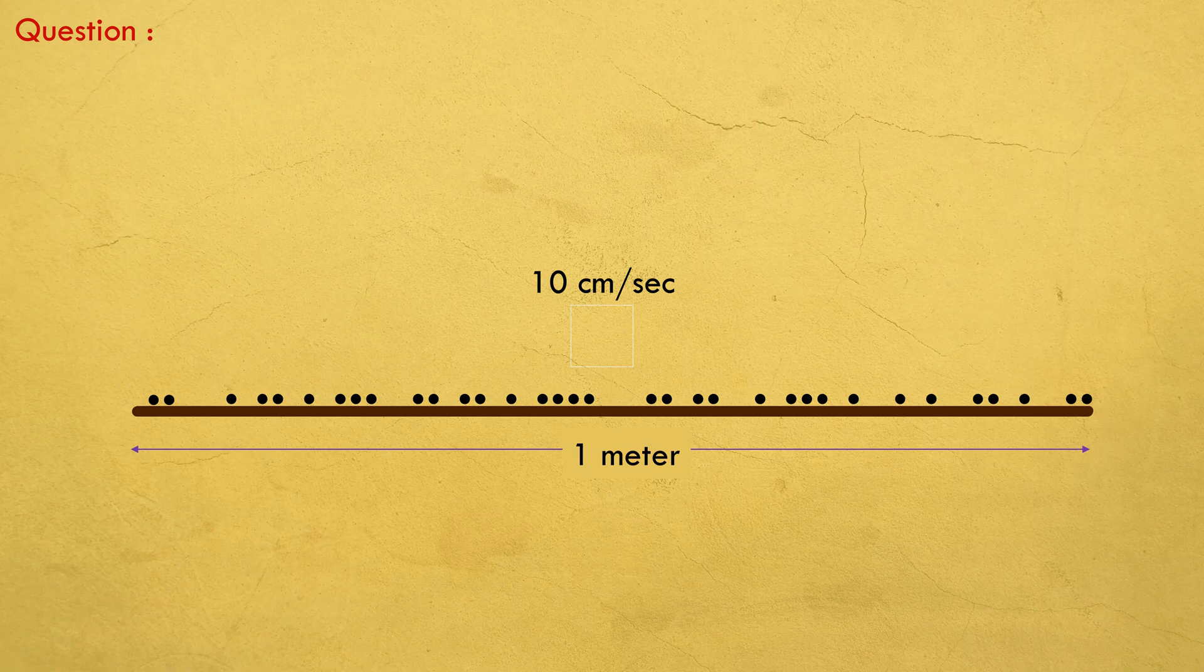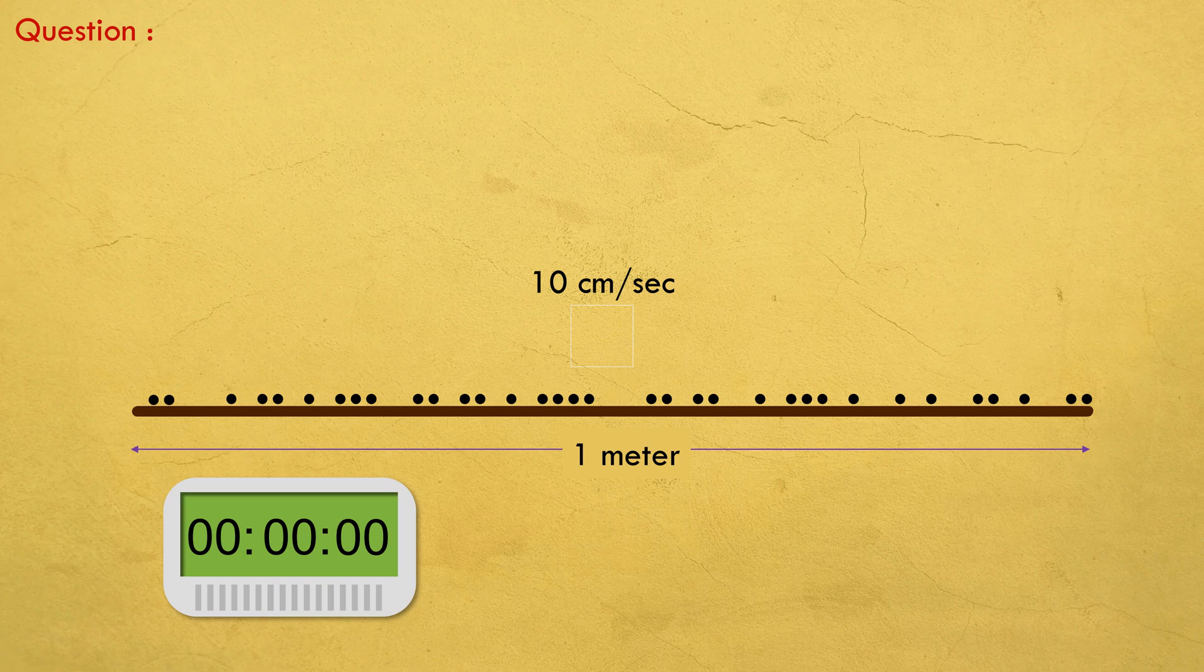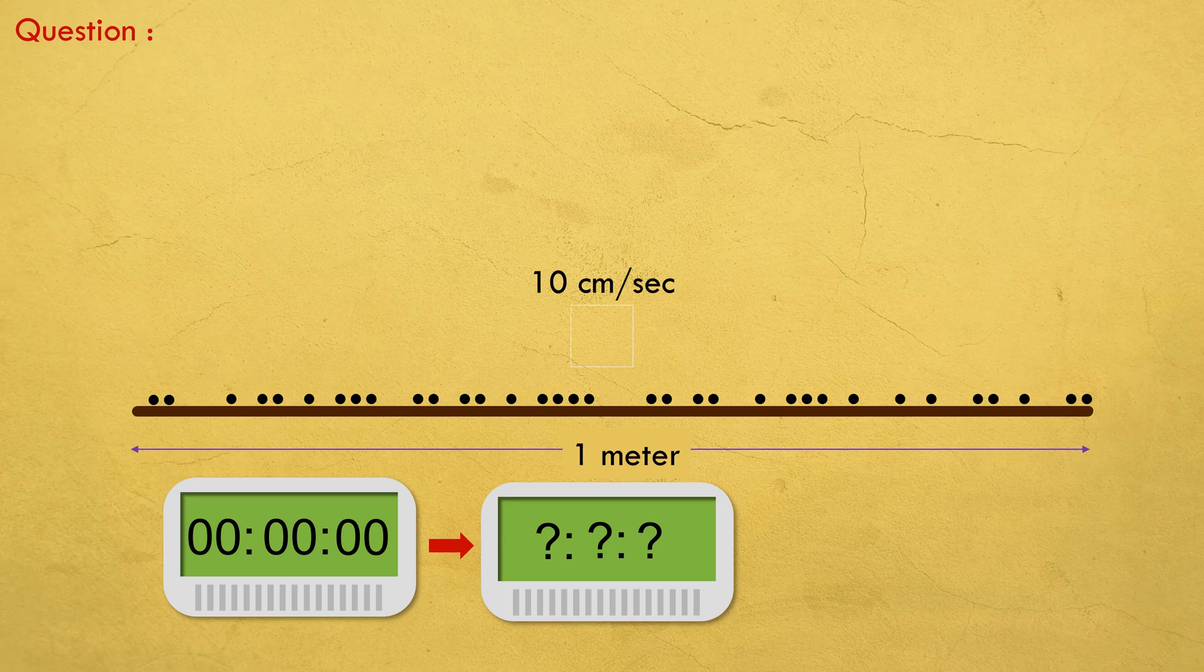Now if you start your timer at any given moment and leave the rod undisturbed, what is the least amount of time after which all the ants are guaranteed to have fallen off?